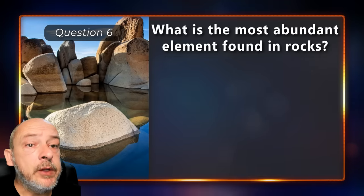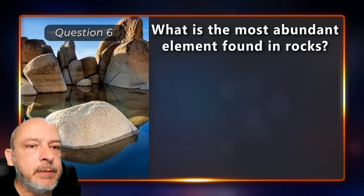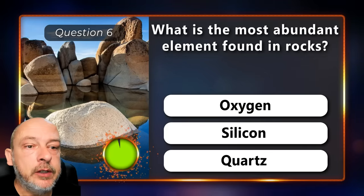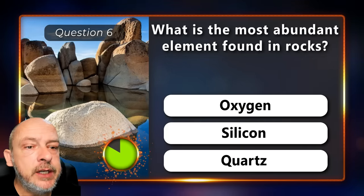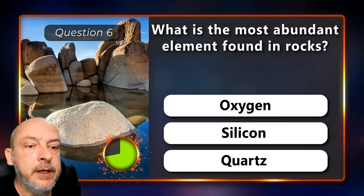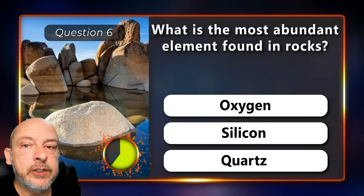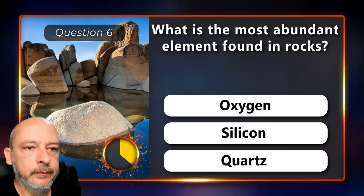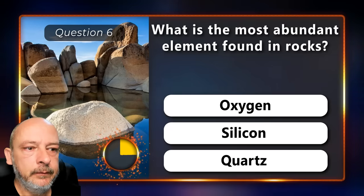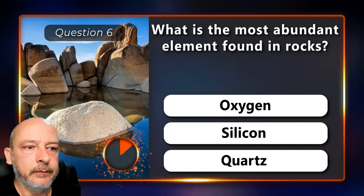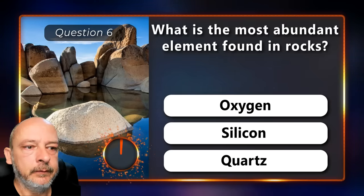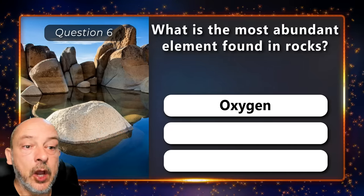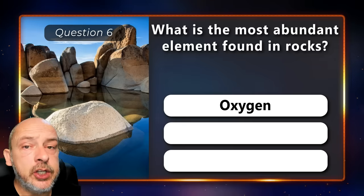What is the most abundant element found in rocks — is it oxygen, silicon, or quartz? The answer is oxygen.